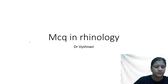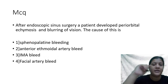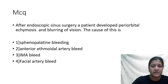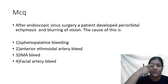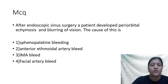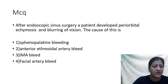We'll begin with the first MCQ. After an endoscopic sinus surgery, a patient developed periorbital ecchymosis and blurring of vision. The cause of this is: (A) sphenopalatine bleeding, (B) anterior ethmoidal artery bleeding, (C) internal maxillary artery bleeding, or (D) facial artery bleeding.